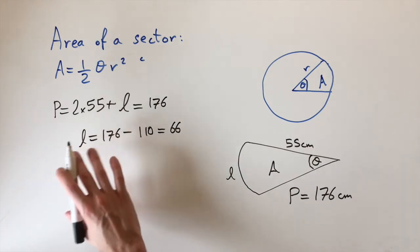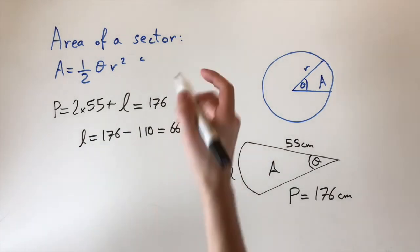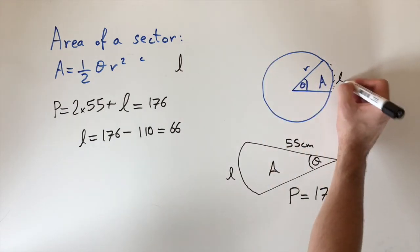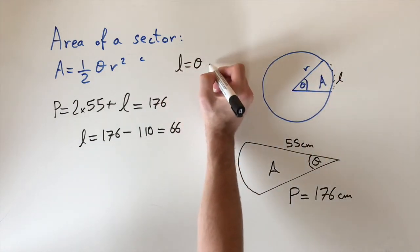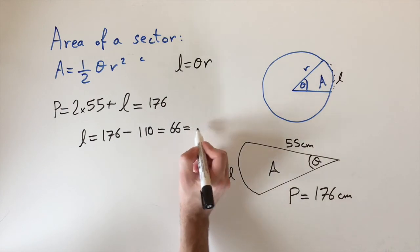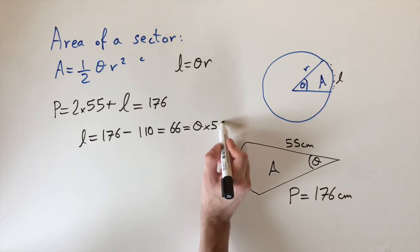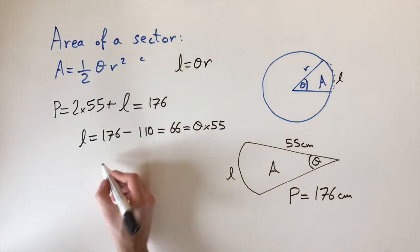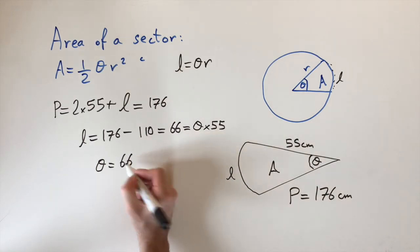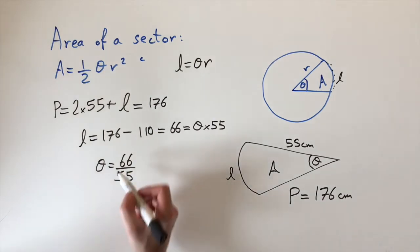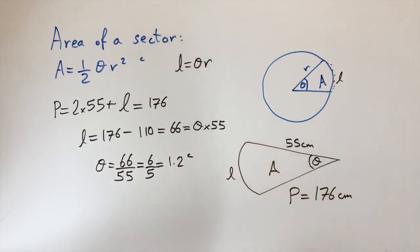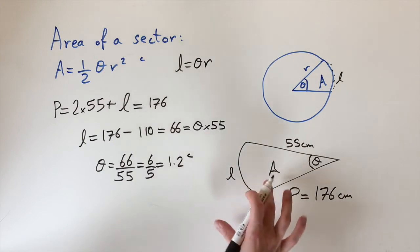Now we use the arc length formula from a previous video: arc length = theta × r. Setting 66 = theta × 55 and rearranging gives theta = 66 ÷ 55. Both are multiples of 11, so this simplifies to 6/5, which equals 1.2 radians.